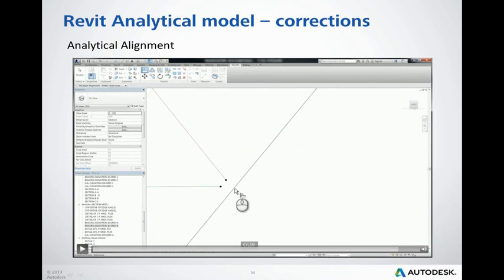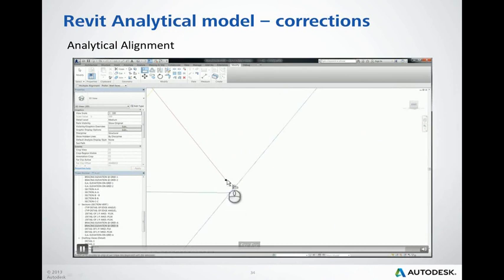With a large zoom, the analytical representation of some bracings in the wall planes is not accurate enough — the bars are not meeting. As usual, we can use the Align option to match them.